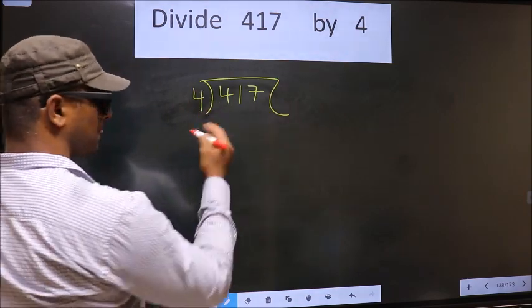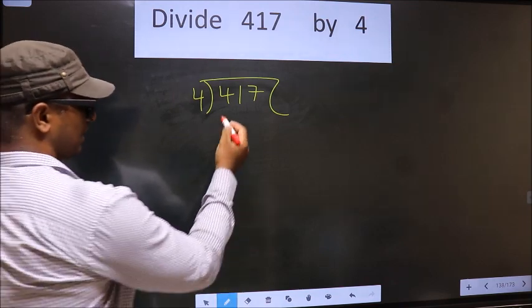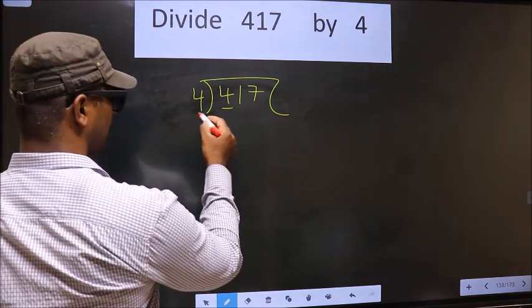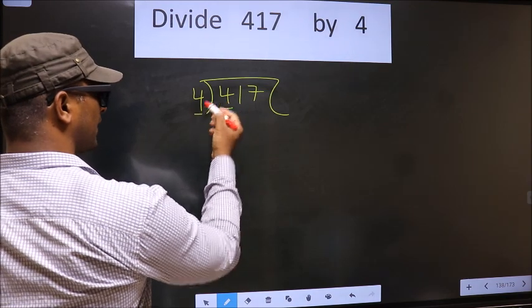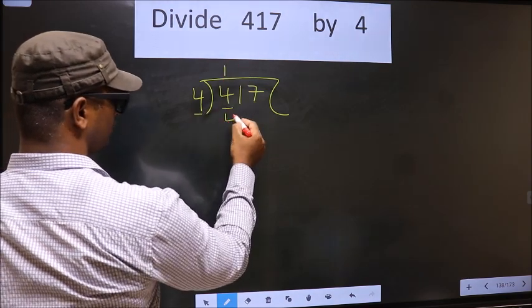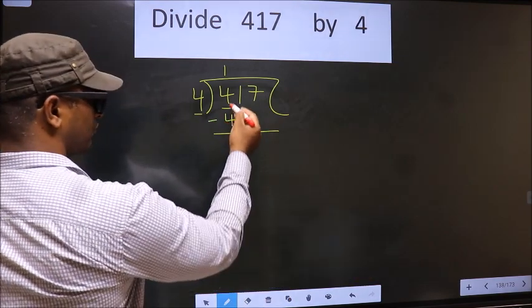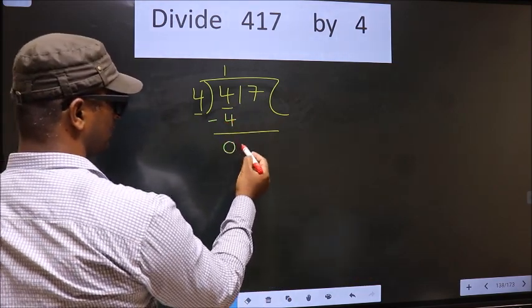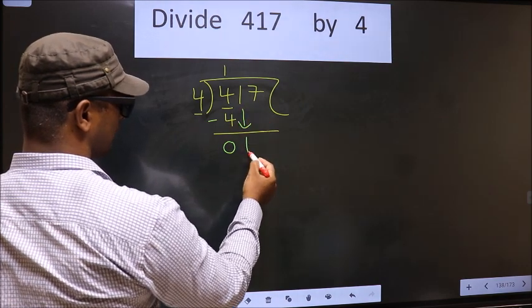We have 4 here, and here also 4. When do we get 4 in the 4 table? 4 once is 4. Now you subtract: 4 minus 4 equals 0. Now you bring down the next number, so 1 comes down.